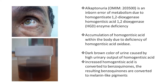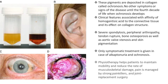Increased homogentisic acid is converted to benzoquinones, and the resulting benzoquinones are converted to melanin-like pigments. These pigments are deposited in collagen, a condition called ochronosis. There are no other symptoms or signs of the disease until the fourth decade of life.